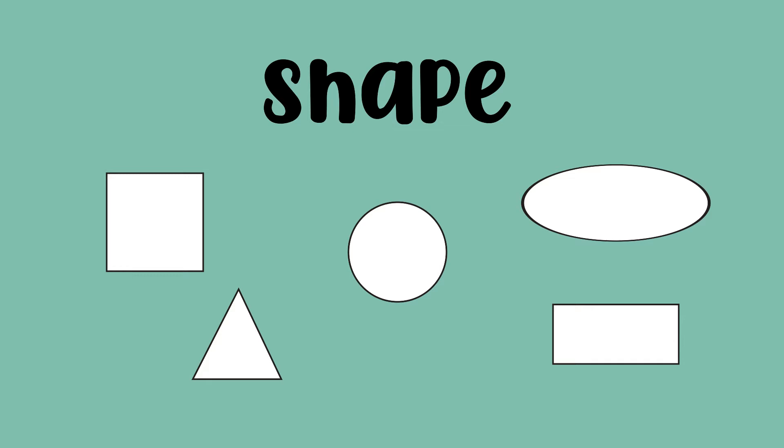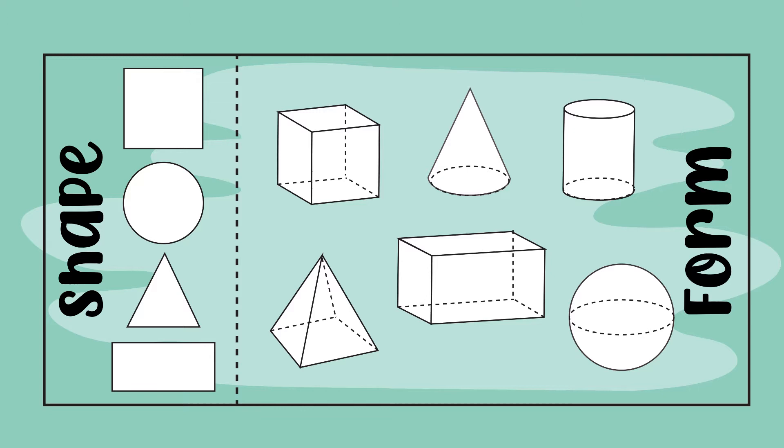Form is the next step after shape. We add depth to create a three-dimensional form. Form is one of the seven elements of art, along with line, value, texture, color, space and shape.